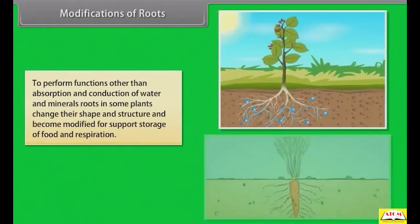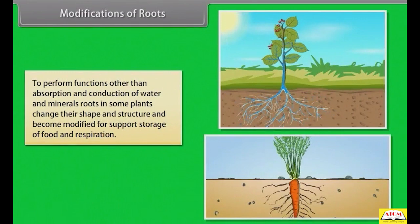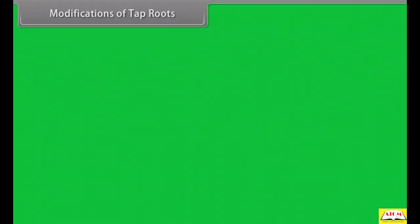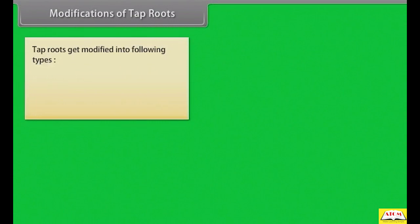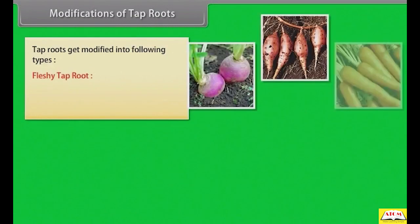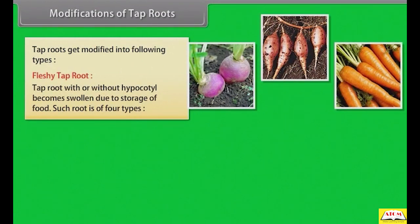To perform functions other than absorption and conduction of water and minerals, roots in some plants change their shape and structure and become modified for support, storage of food, and respiration. Tap roots get modified into fleshy tap roots, where the tap root with or without hypocotyl becomes swollen due to storage of food.